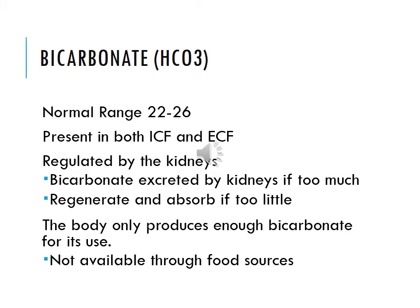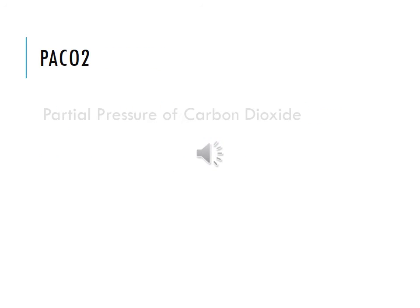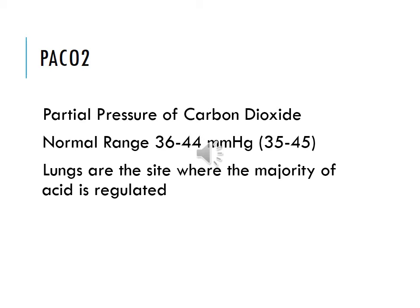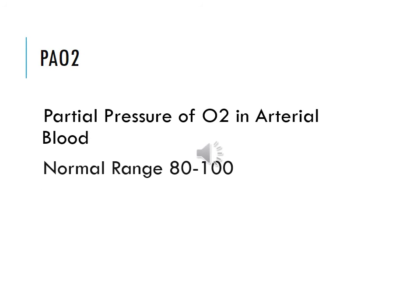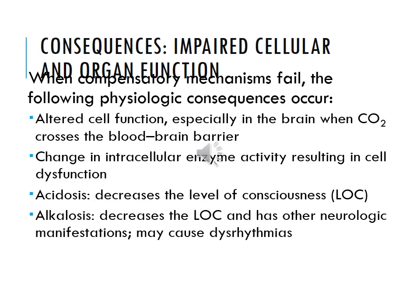Bicarbonate (HCO3) norms are 22 to 26. It's found in both intracellular and extracellular fluid, regulated by the kidneys. Bicarbonate is excreted by the kidneys if too much, and regenerated and absorbed if too little. The body only produces enough bicarbonate for its use, and you can't get it through any food source. PaCO2, the partial pressure of carbon dioxide, normally ranges from 35 to 45 mmHg. The lungs are the site where the majority of acid is regulated. PaO2, partial pressure of oxygen in arterial blood, normal range is 80 to 100.